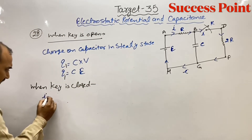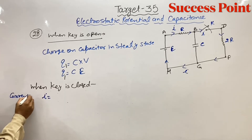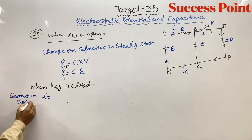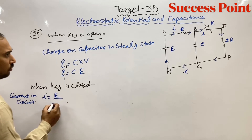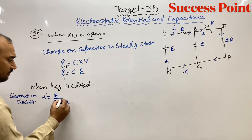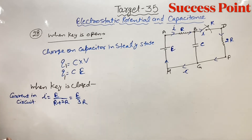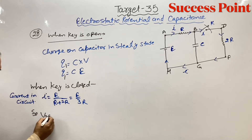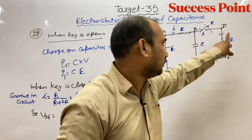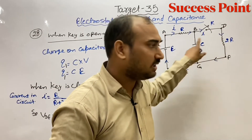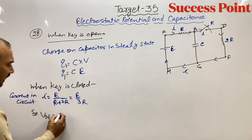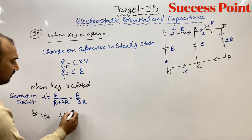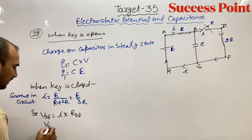The current in the circuit is: i = total voltage / total resistance = E / (R + 2R) = E / 3R. Now, VDF — the potential difference between points D and F — is what will appear across the capacitor, since they are in parallel.